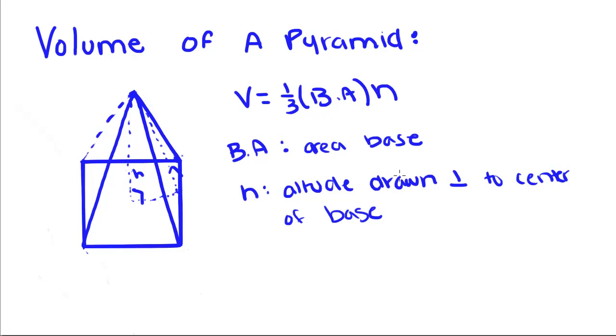There's a couple things we need to talk about first. BA is the area of the base. The area of a base of a pyramid is going to be the area of this square.